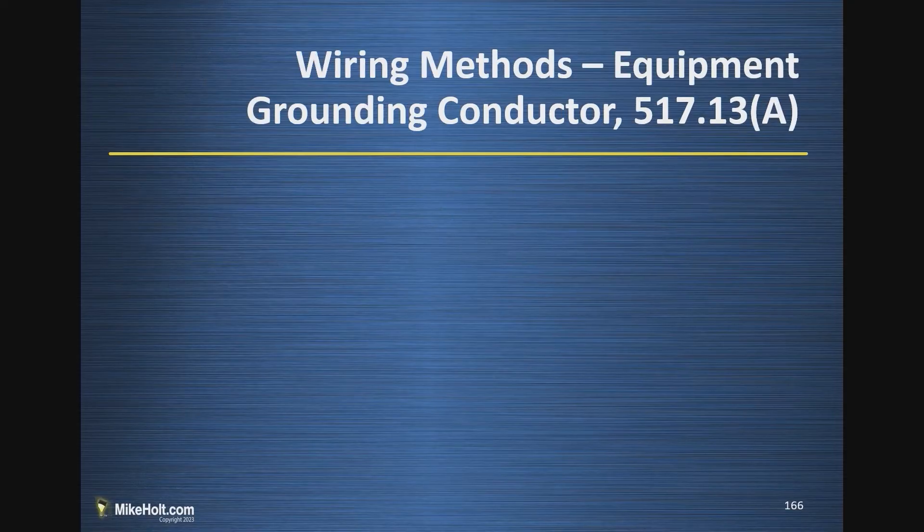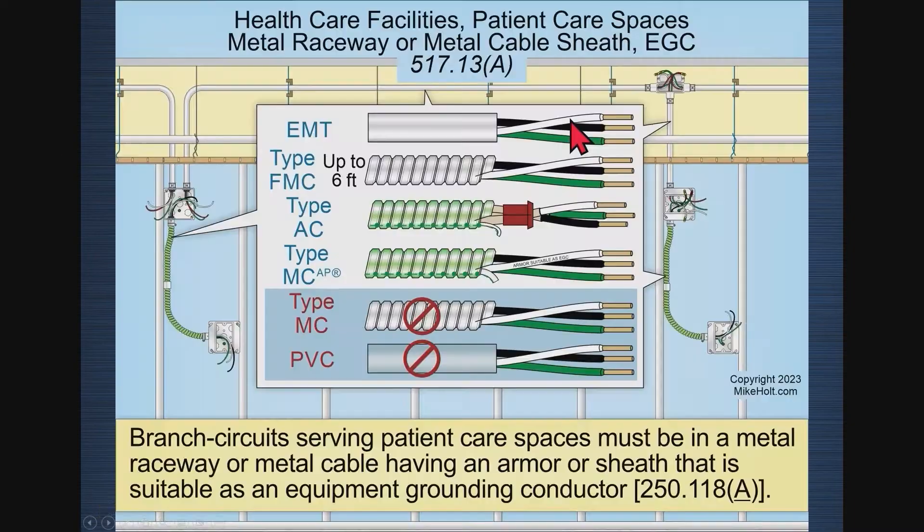Let's talk about wiring methods and the equipment grounding conductor — Section A. There's a term that was used for many years that I've seen come up a couple times, and I don't really like it, but I've kind of let it go by and I'm maybe kind of liking it a little bit more. It's the word 'redundant.'